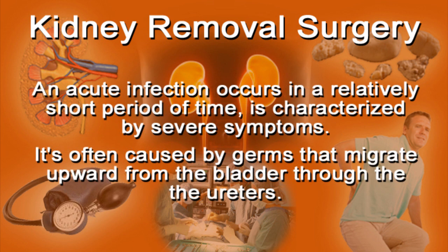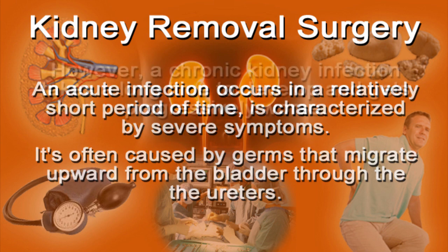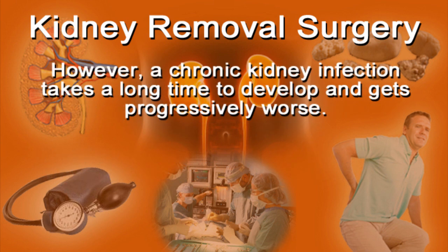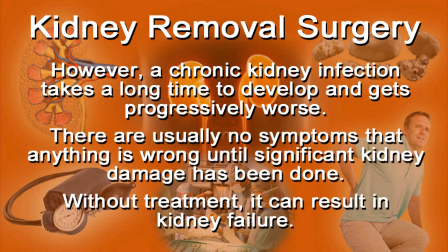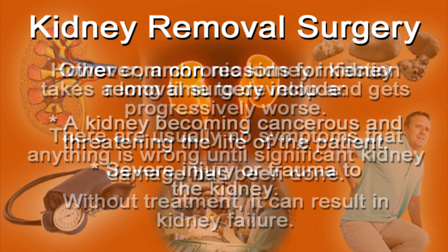An acute infection occurs in a relatively short period of time and is characterized by severe symptoms. It's often caused by germs that migrate upward from the bladder through the ureters. However, a chronic kidney infection takes a long time to develop and gets progressively worse. There are usually no symptoms that anything is wrong until significant kidney damage has been done. Without treatment, it can result in kidney failure.